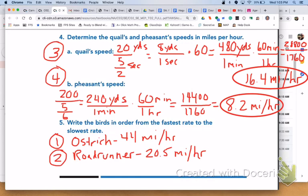For number 5, the order of the birds from fastest to slowest rate. We have the ostrich at number 1 with 44 miles per hour, roadrunner number 2 at 20.5, number 3 would be the quail with 16.4, and number 4 is the pheasant with 8.2.